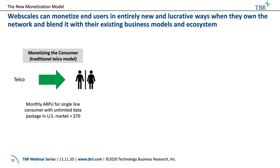Question about CBRS and limited movement by web scales. There are three tranches to CBRS — the bottom tranche is GAA, general authorized access, and that is the tranche web scales are going to use. They don't need to pay for the spectrum. They can use the unlicensed, unencumbered portion and aggregate that with other spectrum bands to provide connectivity. It's a combination of features in 3GPP standards leveraged with unlicensed spectrum bands to enable the outcomes we're talking about in terms of network ownership.